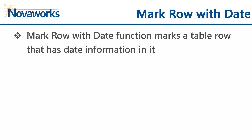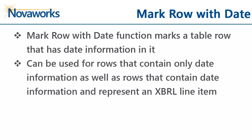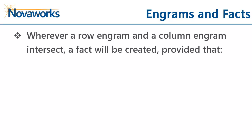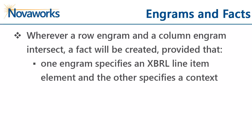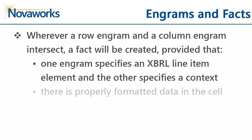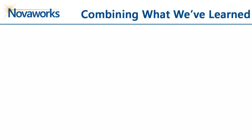Finally, there is the markRowWithDate function. This function is used to mark a row that has date information in it. It can be used for rows that only contain date information, as well as for rows that contain date information and represent an XBRL concept — for example, rows that represent a balance at a particular date. Whenever a row n-gram and column n-gram intersect, a fact would be created, provided that one of the n-grams specifies an XBRL line item element and the other specifies a context, and there is properly formatted data in the cell. Now, let's take a look at how to combine this information.